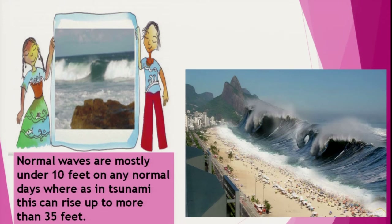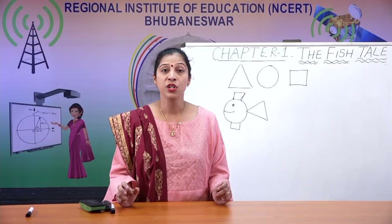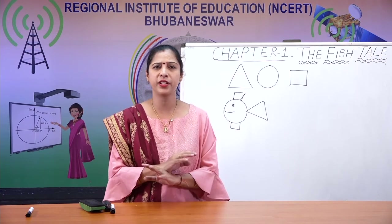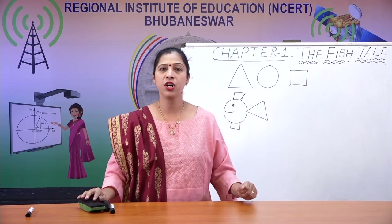Tsunami waves can rise up to 35 feet. There was a big tsunami in 2004 in India. States like Andaman and Nicobar, Tamil Nadu, and Pondicherry were deeply affected. Many people died because long waves came and created so much destruction near the shore — many buildings collapsed.